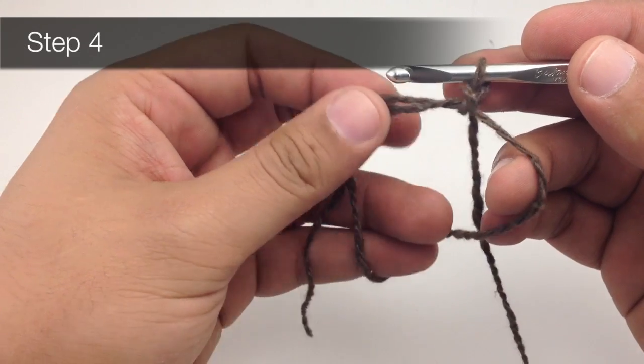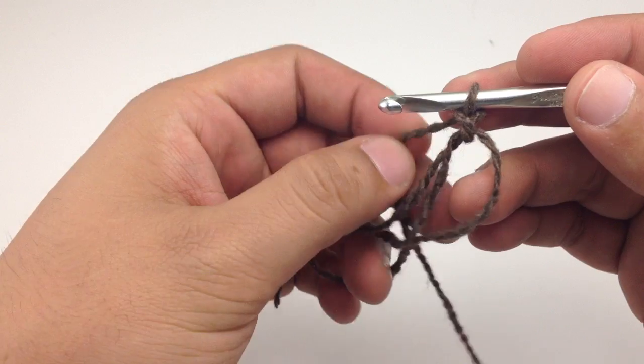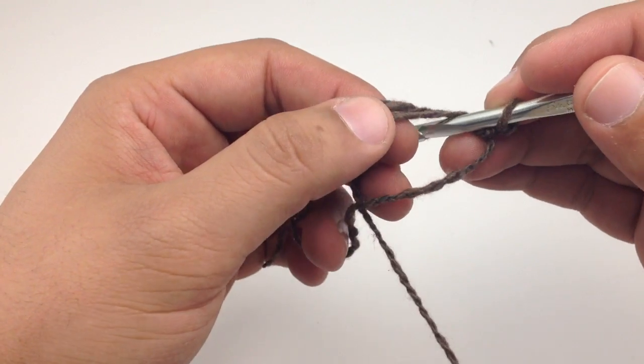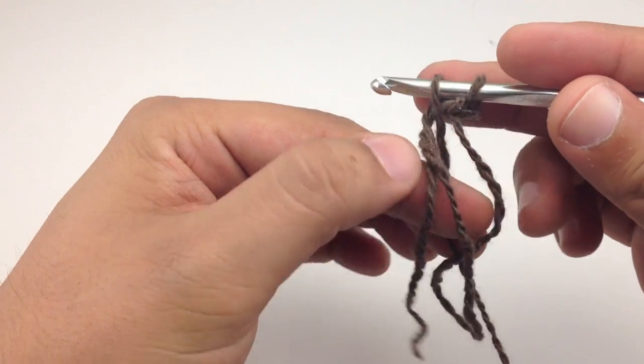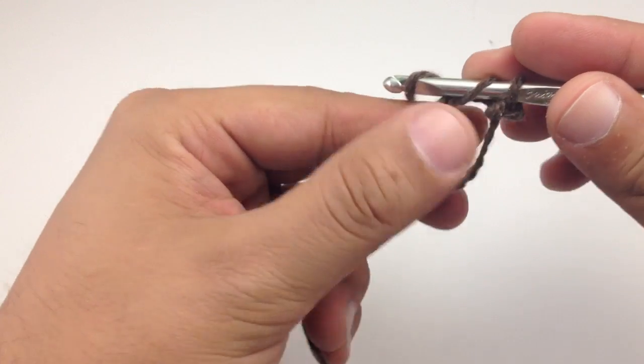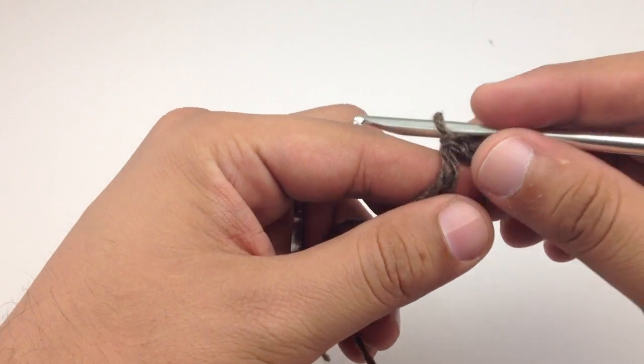For step four we're going to single crochet into the loop that we've created here. We're just going to draw our hook into the center, grab our yarn and draw it through, and then we'll yarn over and draw through both loops on our hook.